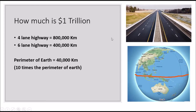In terms of roads and highways, with 1 trillion dollars you can build 800,000 kilometers of four-lane highways and 400,000 kilometers of six-lane highways. Let's compare this with the perimeter of the Earth.